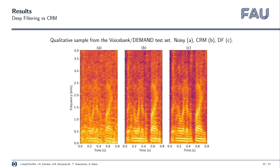To see this behavior, we look at a qualitative example where we have a noisy input signal on the left-hand side. When we look at the third harmonic, we can see that it's barely visible in the noisy signal. In the middle, we can see an enhanced version using a complex ratio mask, and here we can see that it really struggles to reconstruct this harmonic. Finally, on the right-hand side, deep filtering is able to reconstruct this harmonic fairly well, so in the end this sounds more natural.